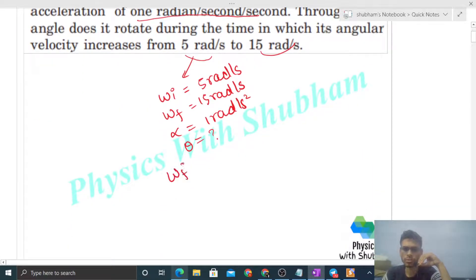That will be simply omega final square minus omega initial square, that is equal to 2 into alpha into theta. Just put the values: omega final, that is 15 square, minus omega initial, 5 square, that is equal to 2 into alpha is 1 into theta.